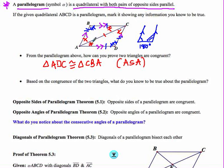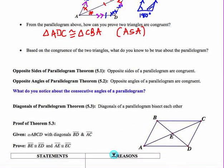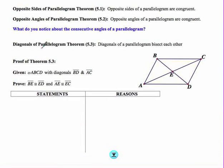We've established that both pairs of opposite sides are parallel, both pairs of opposite sides are equal, and opposite angles are congruent. Now we introduce theorem 5.3, which says the diagonals of a parallelogram bisect each other — meaning point E is both the midpoint of BD and the midpoint of AC. As we've done in the past, we'll prove the theorem before using it in other proofs.